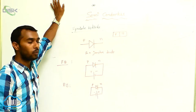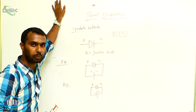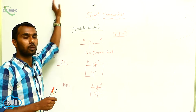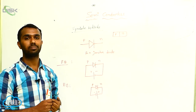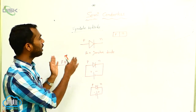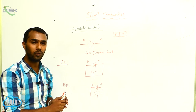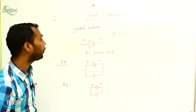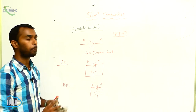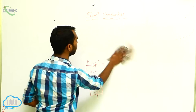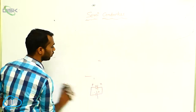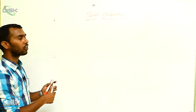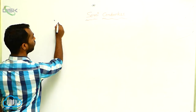Now we have to discuss further concepts. The further concept is the rectifier. This P-N junction diode can be used as a rectifier — it is an application of the P-N junction diode. Now we have to discuss about rectifiers.